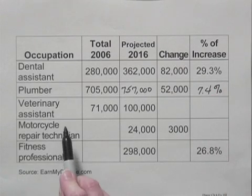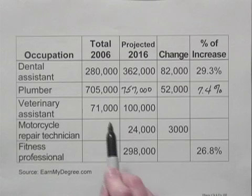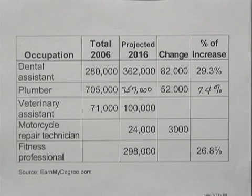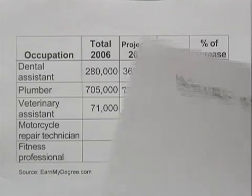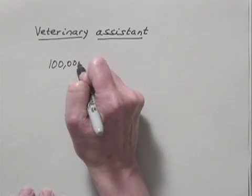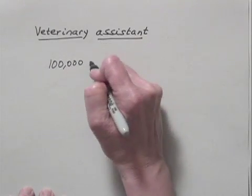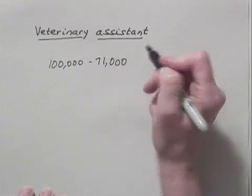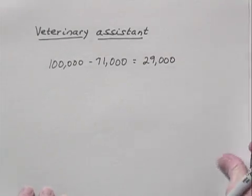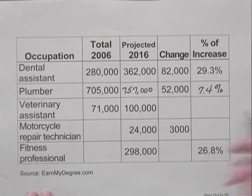Now let's look at the veterinary assistant jobs. There were 71,000 in 2006, and it's projected that there will be 100,000 in 2016. So we can subtract to find the change. The projected number in 2016 is 100,000, and we'll subtract the 2006 number. When we do that, we get 29,000 for the change. So let's fill that in.